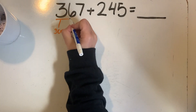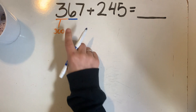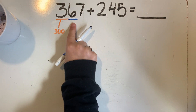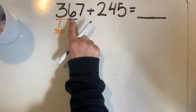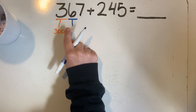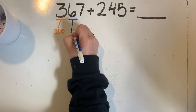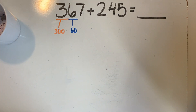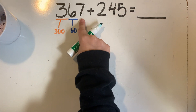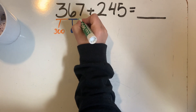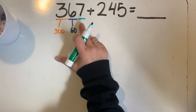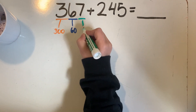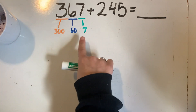Now I'm going to move to my tens place. This six is in my tens place, and it is telling me that I have six groups of 10. Six groups of 10 is 60. Now I'm going to move to my ones place. The ones are telling me how many groups of one I have, so this is telling me I have seven groups of one, or seven.